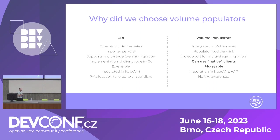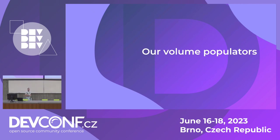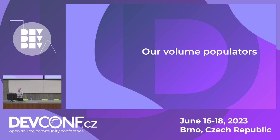The reason we chose volume populators is twofold: we wanted to leverage the pluggable design, and we wanted the ability to run native tools inside the populator pod. When planning Forklift 2.4, we realized we needed to minimize risk to deliver OpenStack migration on time — and that meant avoiding changes to CDI. We also knew it would take time to build inventory first. So we started with the volume populator for OVIRT, replacing some CDI functionality.